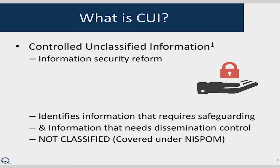What is controlled unclassified information? The CUI reform was a security reform brought on by the federal government, designed to ensure that all government agencies had uniform classification methods for documents. It identifies information that needed safeguarding and information requiring controlled dissemination. This does not apply to classified information, which is covered under NISPOM, nor does it apply to Freedom of Information Act information.